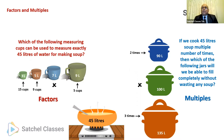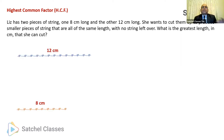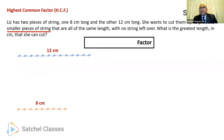That brings us to the concept of highest common factor. Let's understand this through an example. Liz has two pieces of string, one 8 centimeters long and the other 12 centimeters long. She wants to cut them into smaller pieces all of the same length with no string left over. What is the greatest length in centimeters that she can cut? She is cutting them into smaller pieces of equal length, which means she's trying to find factors of 12 and factors of 8.